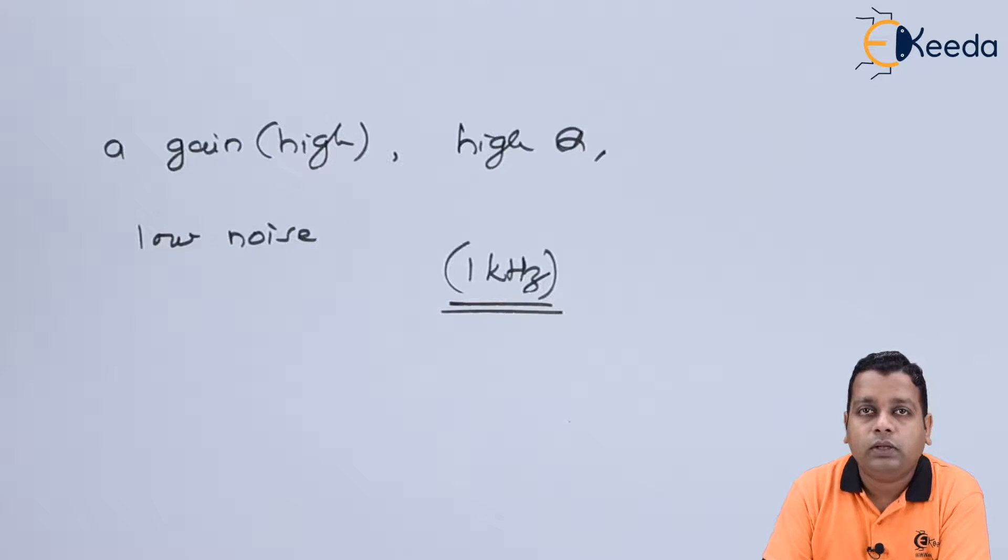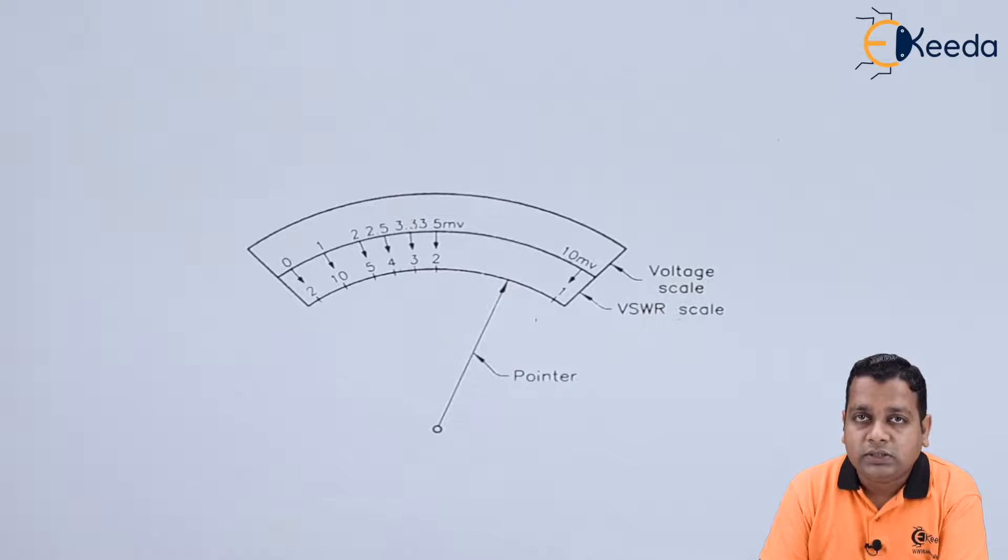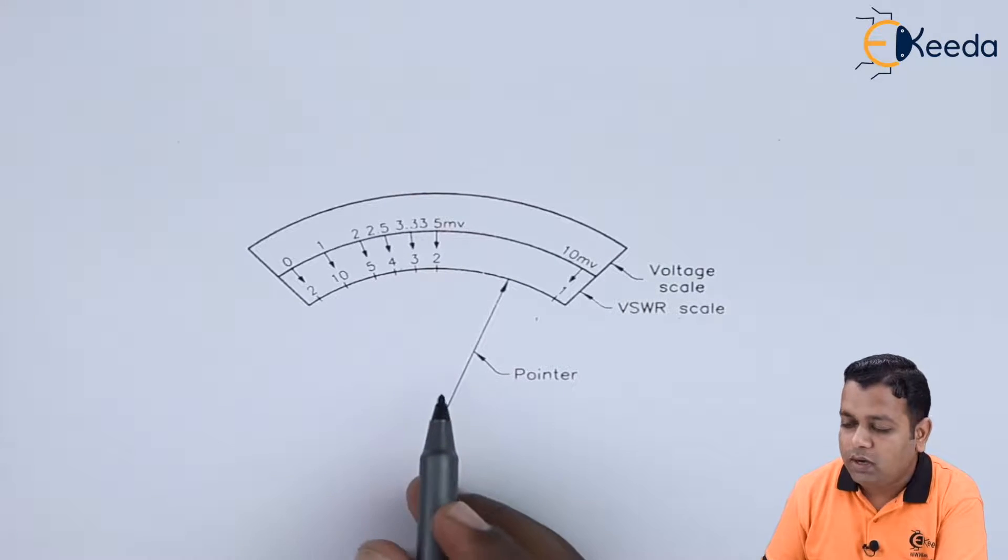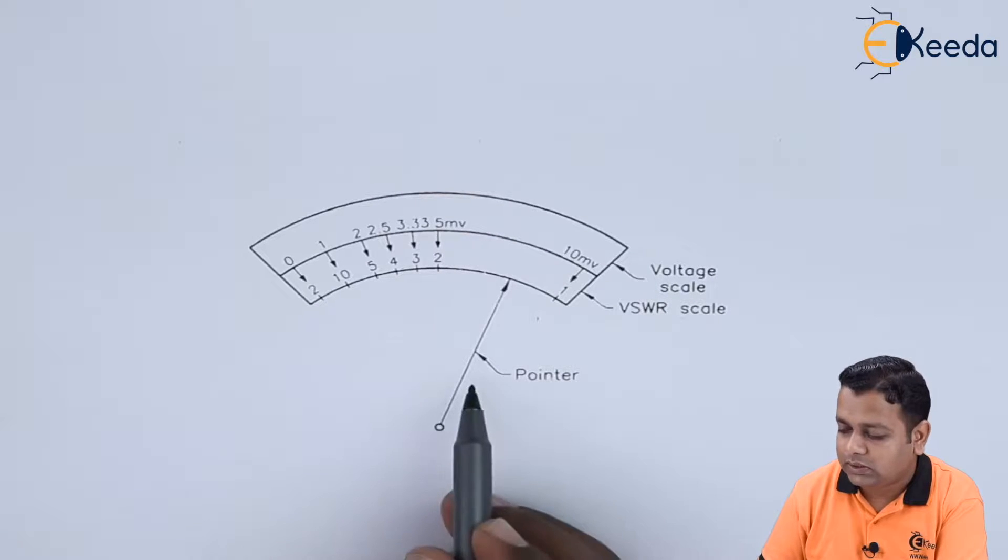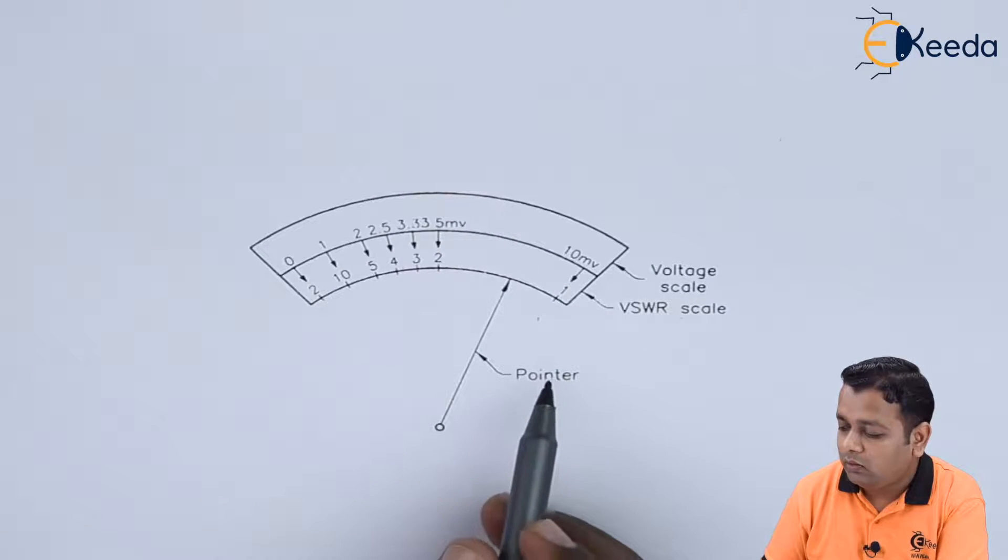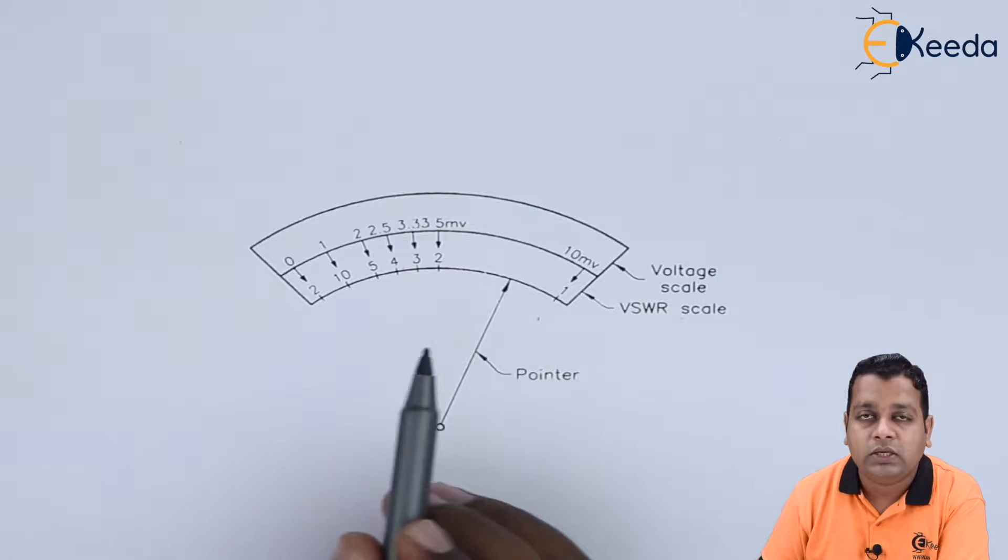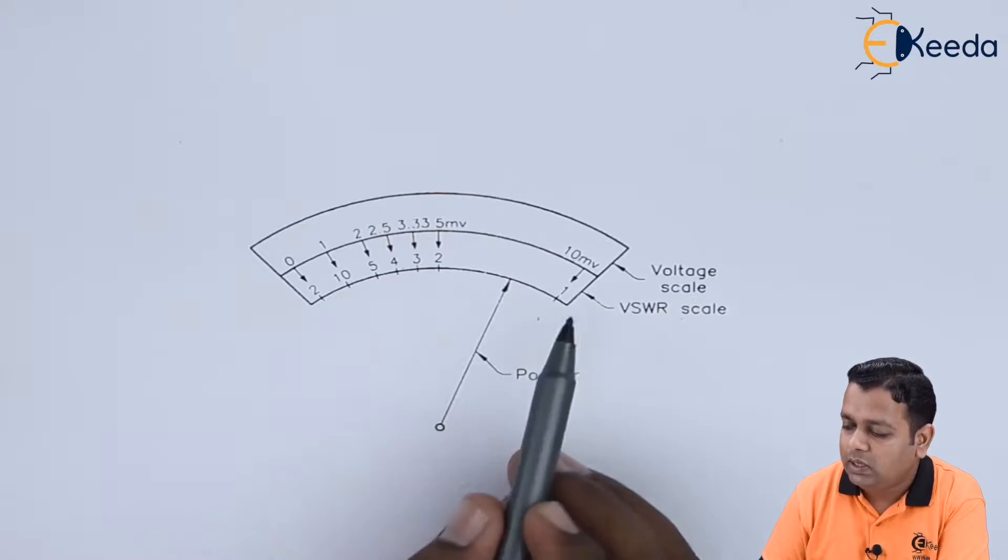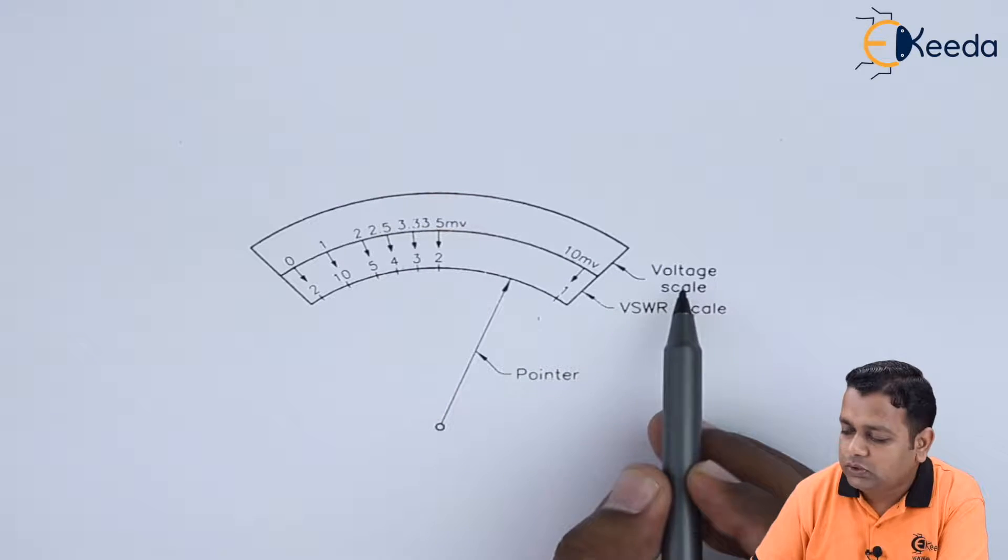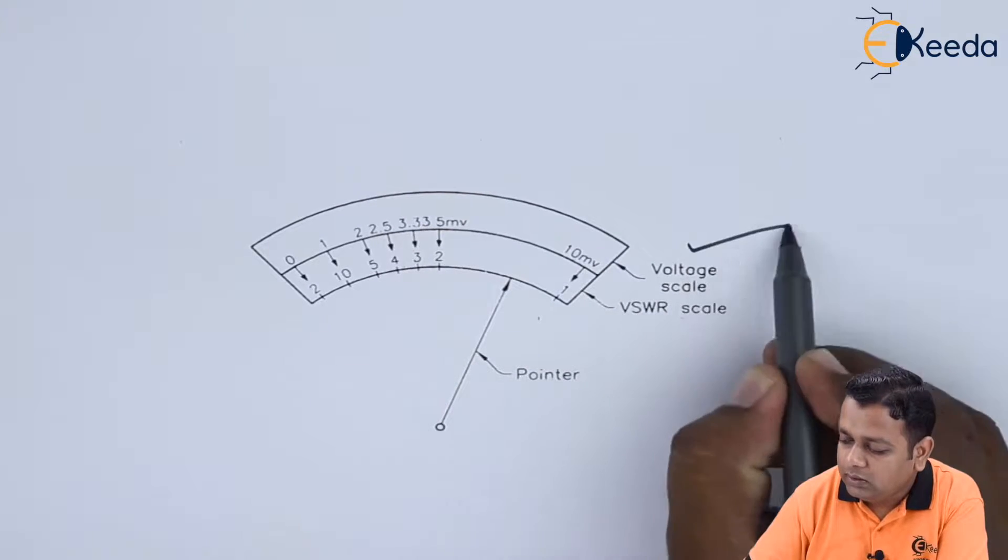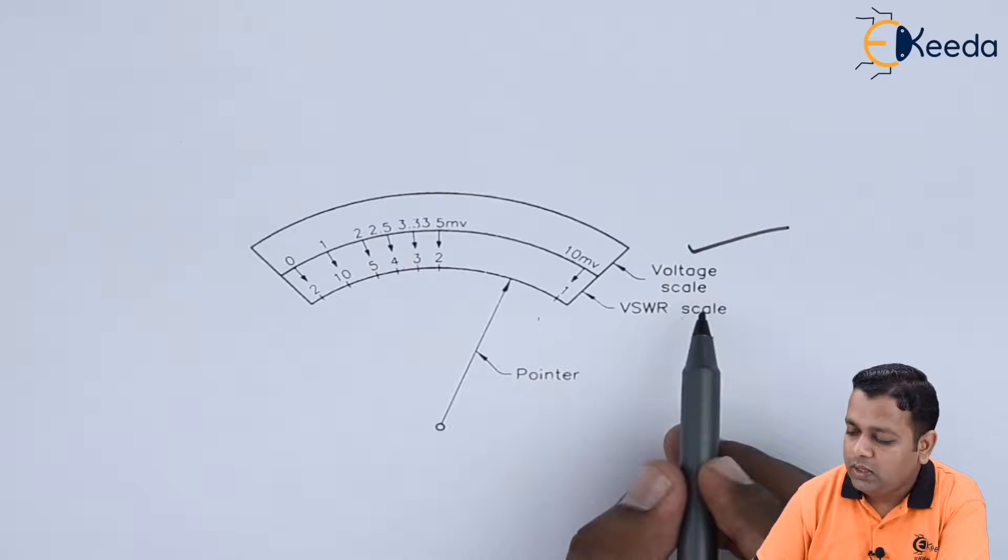Now let us visualize how the markings of the VSWR can be there onto the VSWR meter. This is the schematic diagram. In this schematic diagram we have such a scale for the analog type and this is the pointer pointing to the various values. Here we have the two scales: the first one onto the upper hand side, this is called as the voltage scale, standing from 0 to 10 millivolts.